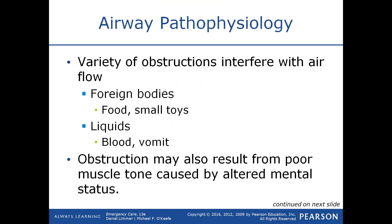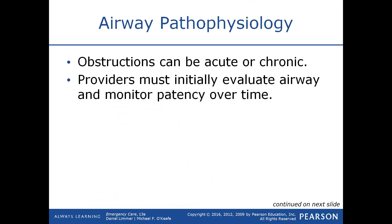A variety of obstructions can interfere with airflow into the lungs. These include foreign bodies such as food or a small toy, as well as liquids like blood or vomit. Obstruction may also result from poor muscle tone caused by an altered mental status. When a person is unresponsive and lying flat on their back, the tongue — a rather large muscle — becomes flaccid and drops to the back of the throat, causing partial to complete airway obstruction. A partial obstruction produces the sound of snoring. Obstructions can be acute, as with vomiting, or chronic, as with sleep apnea.